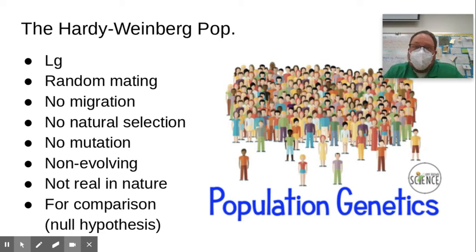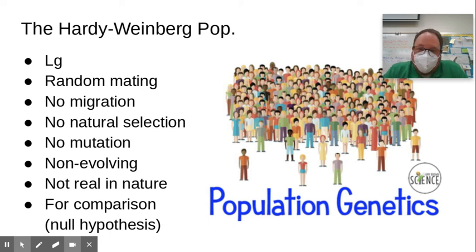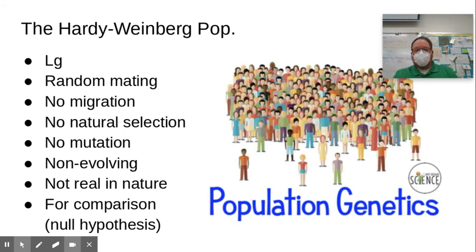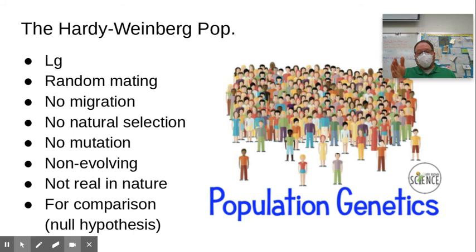Does that seem realistic at all — to have a large, randomly mating, non-migrating population with no natural selection and no mutations? No, it's absurd — that just doesn't happen. So why do we have Hardy-Weinberg in the first place? It's there for a basis of comparison. In a Hardy-Weinberg population there is no change, but in reality populations are changing all the time. Hardy-Weinberg gives us a benchmark. Populations don't generally exist in Hardy-Weinberg equilibrium because individuals move in and out of populations and mutations occur, but we have Hardy-Weinberg as a control.